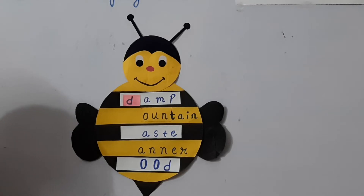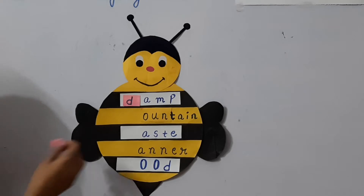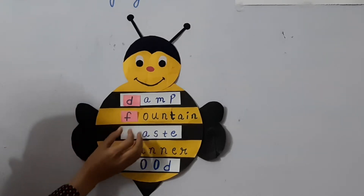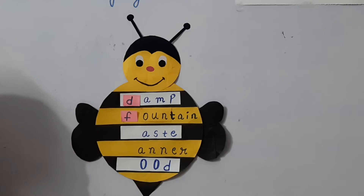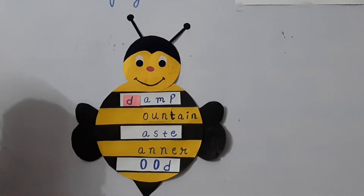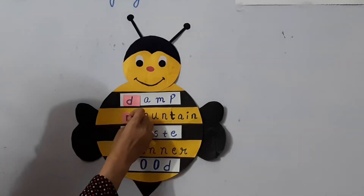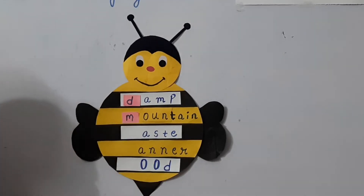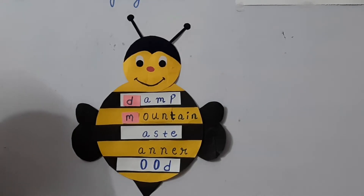The next one: O-U-N-T-A-I-N. Now if I add F to this, what will it become? F-O-U-N-T-A-I-N, fountain. And if I add M to this, what will it become? M-O-U-N-T-A-I-N, mountain. Fountain and mountain.